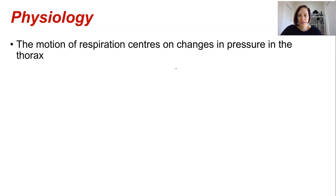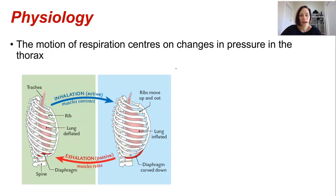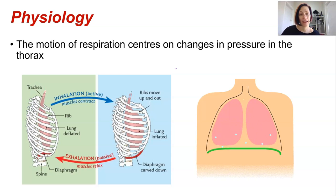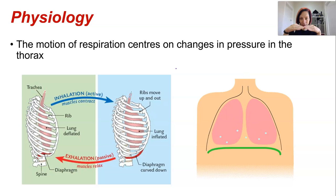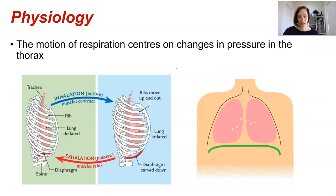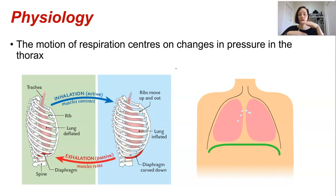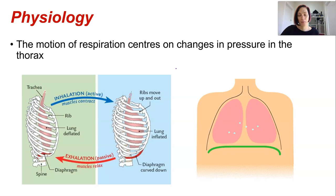The diaphragm sits directly underneath your lungs and its job is to change the pressure inside the thorax and therefore in the lungs. When the diaphragm contracts it pulls down, which lowers the pressure in the lungs compared to the outside, meaning it draws air in. When the diaphragm relaxes it moves upwards, the thorax space gets smaller, pressure gets higher, and air pushes out.